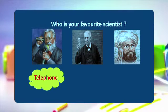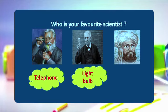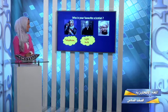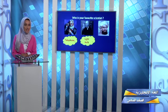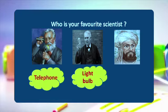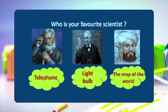Then we have Thomas Edison, who we just met in the video, and he invented the light bulb — to save energy. And finally, Al-Khawarizmi. I'm sure you remember him — we have studied a lot about Al-Khawarizmi. One of his most important inventions is the map of the world.